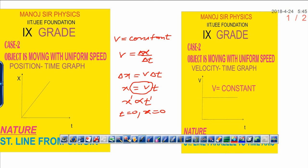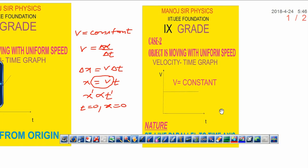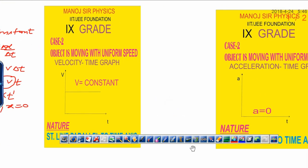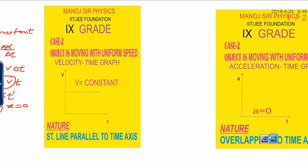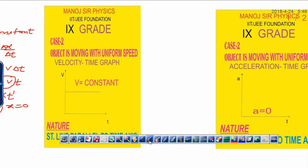And similarly, the second graph is the velocity-time graph. An object is moving with uniform speed. You know speed is constant here.